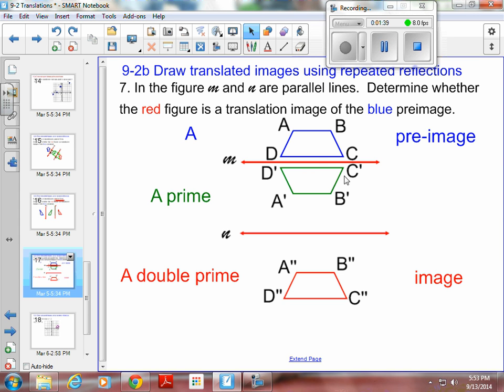Notice A prime, D prime, C prime, and B prime. If I reflect the green trapezoid A prime across line N, I'm going to get A double prime. So now A double prime, B double prime, C double prime, D double prime. That's how you say that.